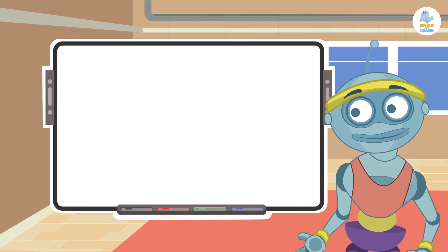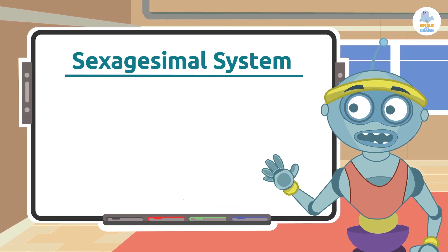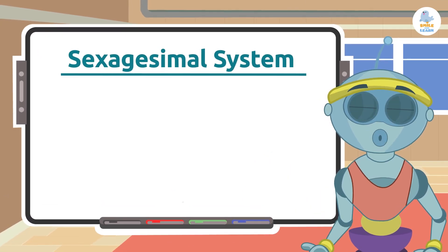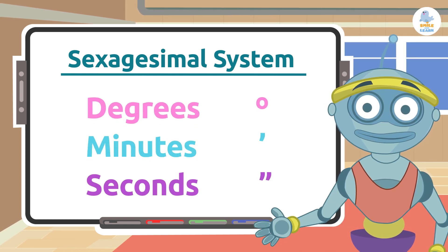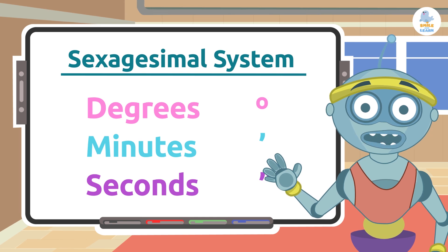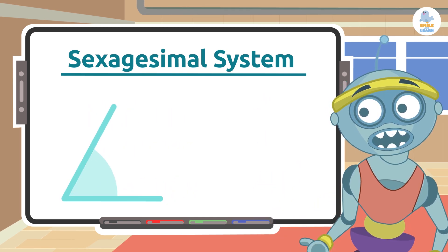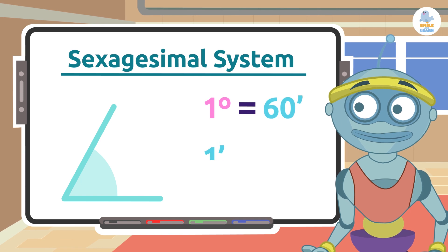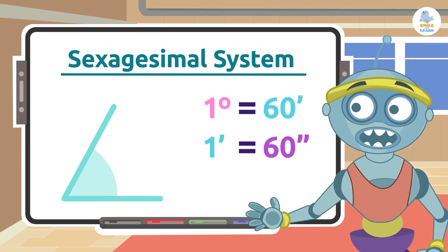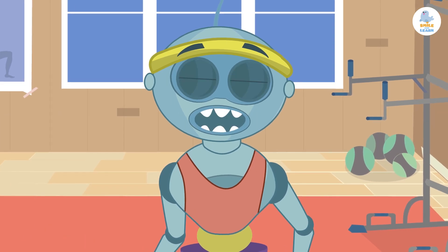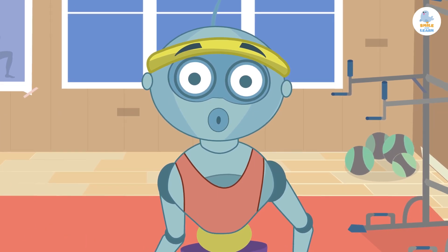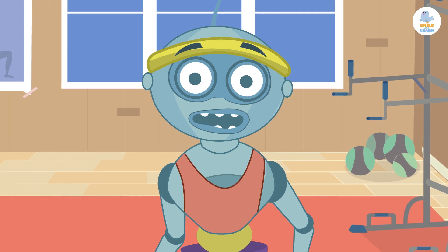We use the sexagesimal system to measure angles, which uses degrees, minutes, and seconds as units. You already knew that, didn't you? Also, let me remind you that one degree is equal to 60 minutes, and one minute equals 60 seconds.